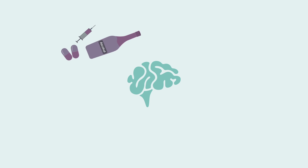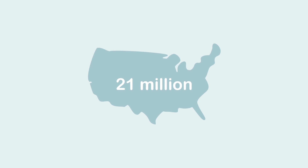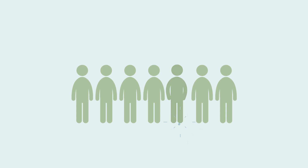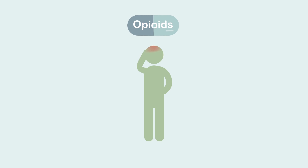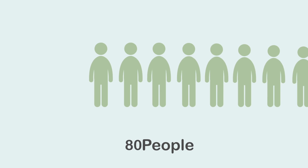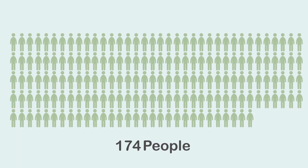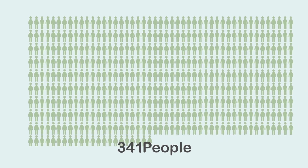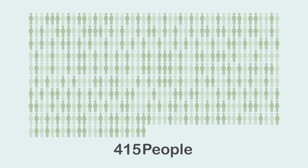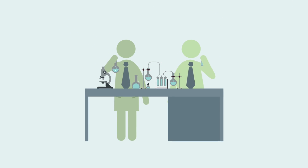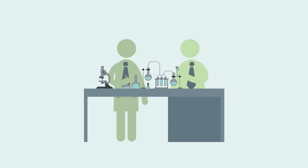What is addiction? Also called a substance use disorder. Over 21 million people nationwide suffer from addiction, and one in seven people will experience addiction at some point in their life. Recent increases in the use of opioids have compounded the problem. Each day, we lose 174 people to drug overdoses, and that number climbs to 415 if you factor in alcohol-related deaths.